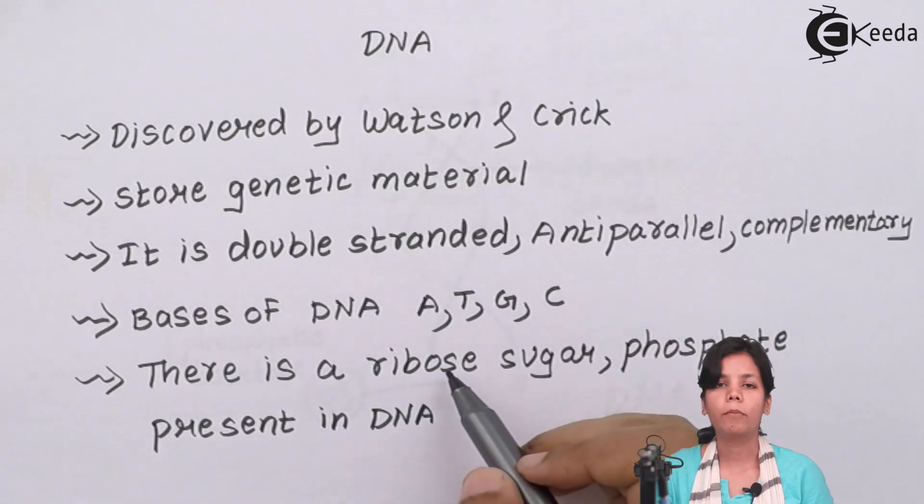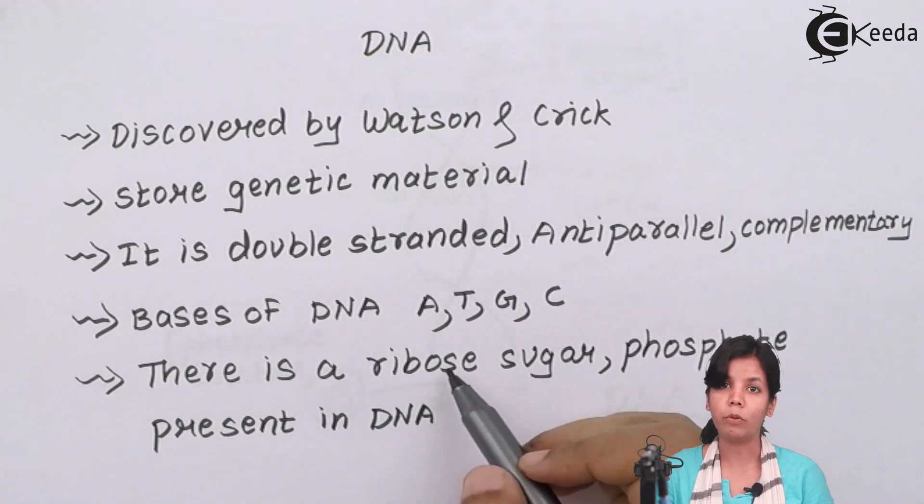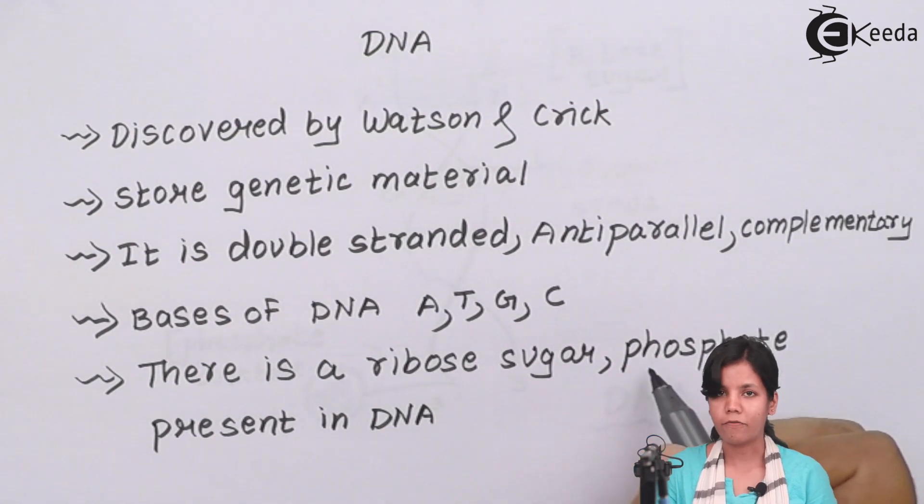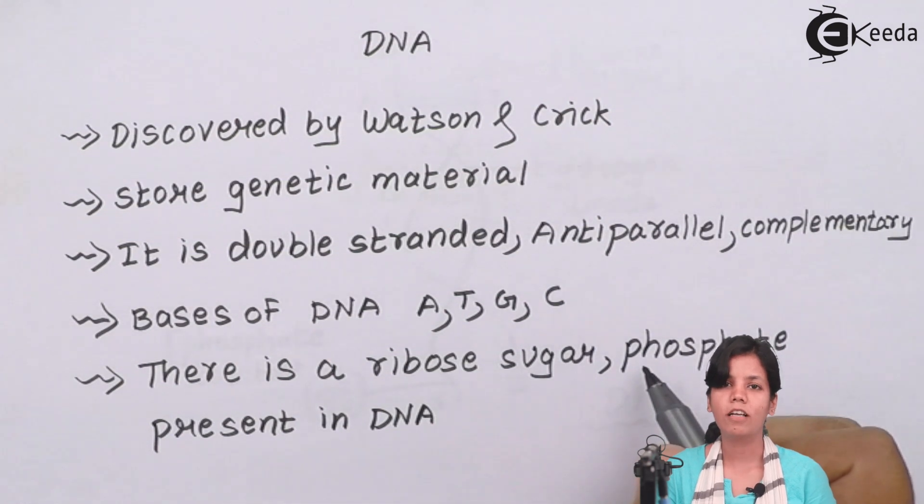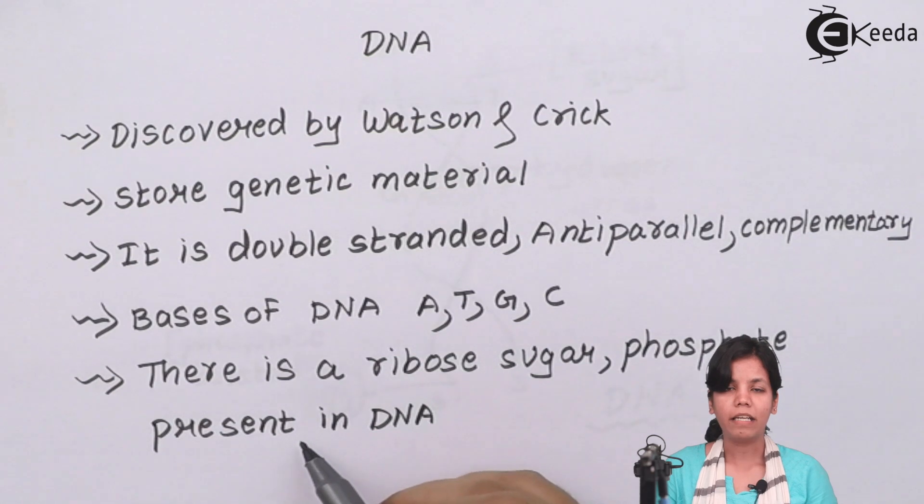Now there is complementary pairing between the bases. For example, A always pairs with T and G always pairs with C. There is a ribose sugar, when I say ribose sugar it means a pentose sugar which provides DNA its energy source. For example, when you eat food you get your energy, similarly when DNA has to do work it uses ribose sugar or pentose sugar. Phosphate, or you can see the backbone of DNA as your spinal cord. If the spinal cord is not present, you cannot walk erect or stand erect. Similarly, phosphate forms the backbone of DNA.